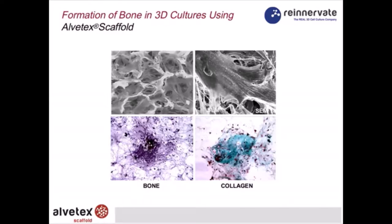The cells create complex three-dimensional structures spanning across the voids inside the material, growing in close proximity with their neighboring cells. The bottom two images show: on the bottom left, a Von Kossa stain for bone nodules — dense material showing evidence of mineralization through precipitation of silver ions with phosphate. The collagen stain here is Mallory's trichrome, which stains collagen a bluish-green, and you can see the collagen staining very clearly in that image.